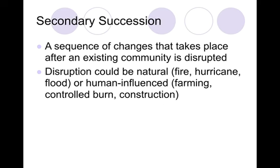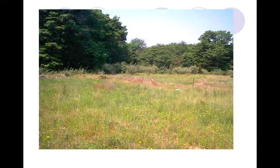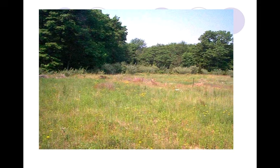Secondary succession is the second type of biological or ecological succession, and this is changes that take place after an existing community is disrupted. This disruption can be either natural or it can be human-influenced. Natural disruptions include a fire, a hurricane, or a flood. Human influences could be due to construction — like the succession we talked about on our school property — farming, or a controlled burn. With secondary succession, you have to know that there's soil present for the organisms to be able to start to recolonize.